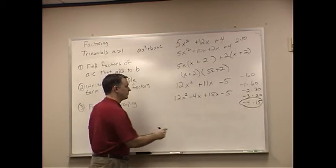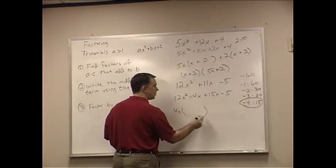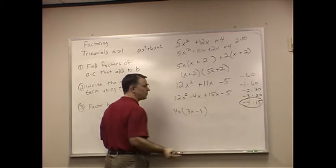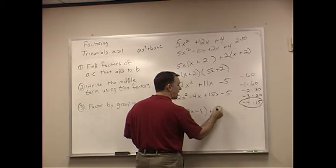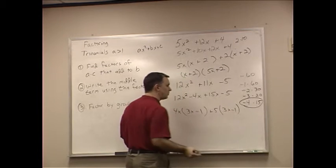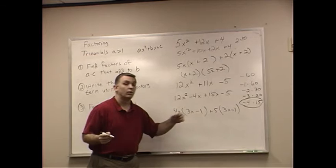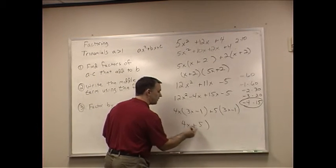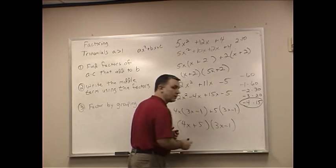Now, I'm going to factor by grouping. These both have a 4x in common. So, when I divide 4x out of both of them, that leaves me 3x minus 1. These both have a 5 in common. So, I'm going to pull the 5 out. And that leaves me, again, 3x minus 1. If you take a look, when you factor by grouping, what's in the parentheses has to be identical. So, I get 4x plus 5 going inside of a parentheses, and 3x minus 1.